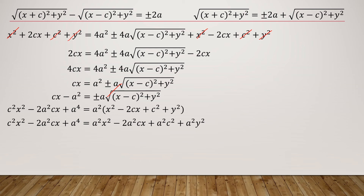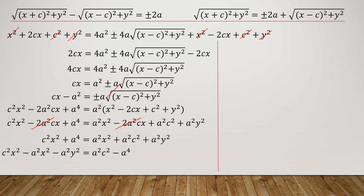Adding 2a²cx to both sides, the -2a²cx terms cancel. We then have c²x² + a⁴ = a²x² + a²c² + a²y². Rearranging using the addition property of equality, we get c²x² - a²x² - a²y² = a²c² - a⁴. Factoring x² on the left gives (c² - a²)x², and factoring a² on the right gives a²(c² - a²).